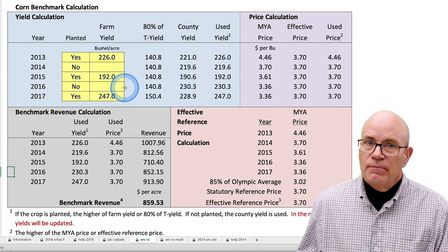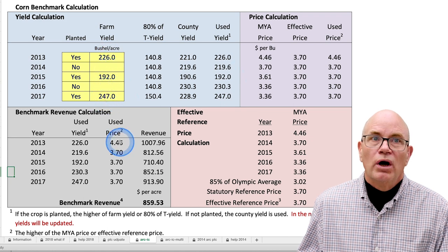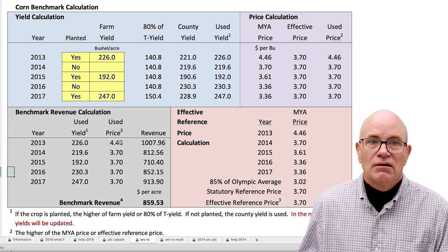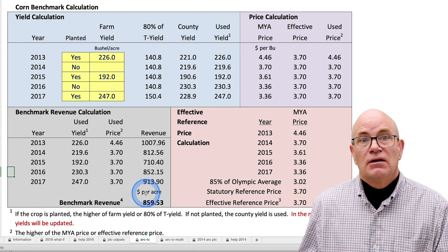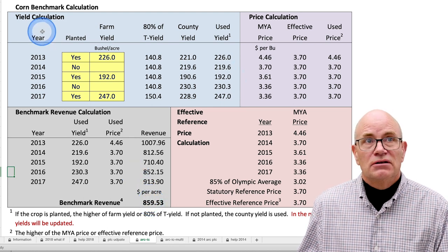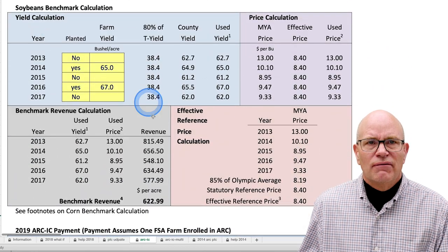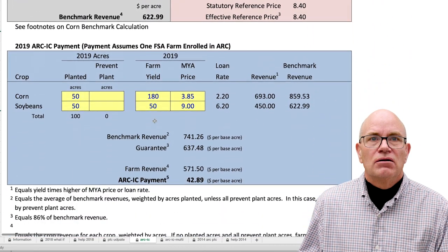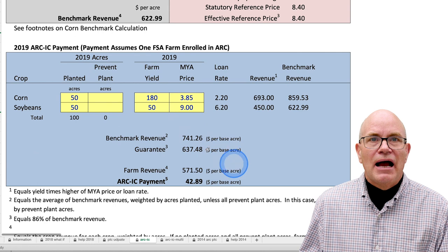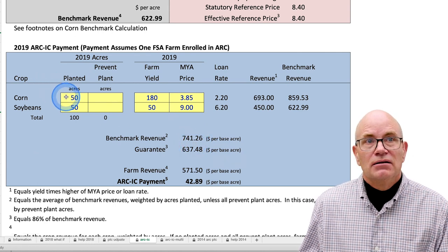So you enter those farm yields for the years 2013 to 2017 when that crop was planted. That will be used to calculate a benchmark revenue. This happens to be for corn — do the same thing for soybeans. And then those two are averaged, weighted by acres planted.